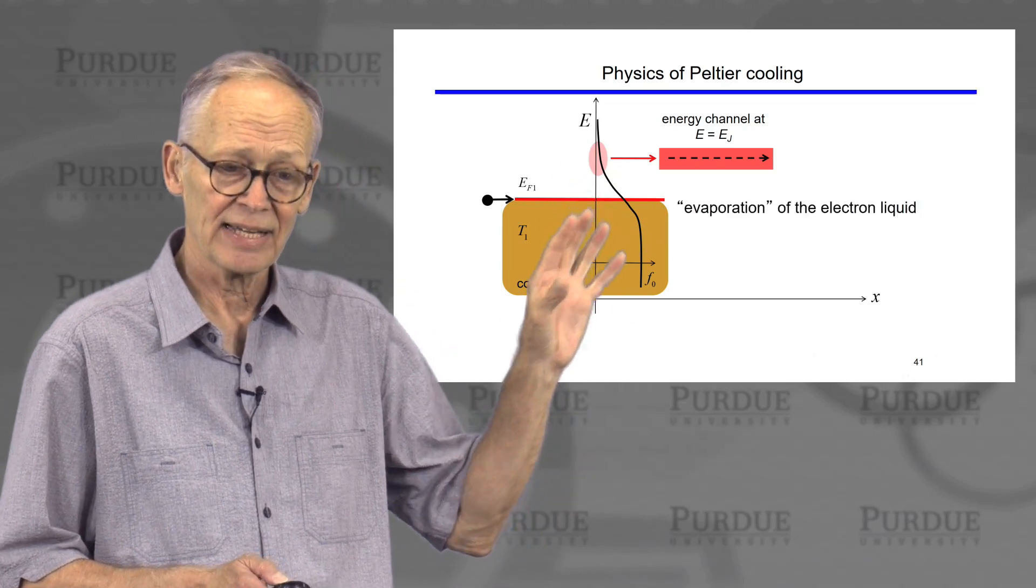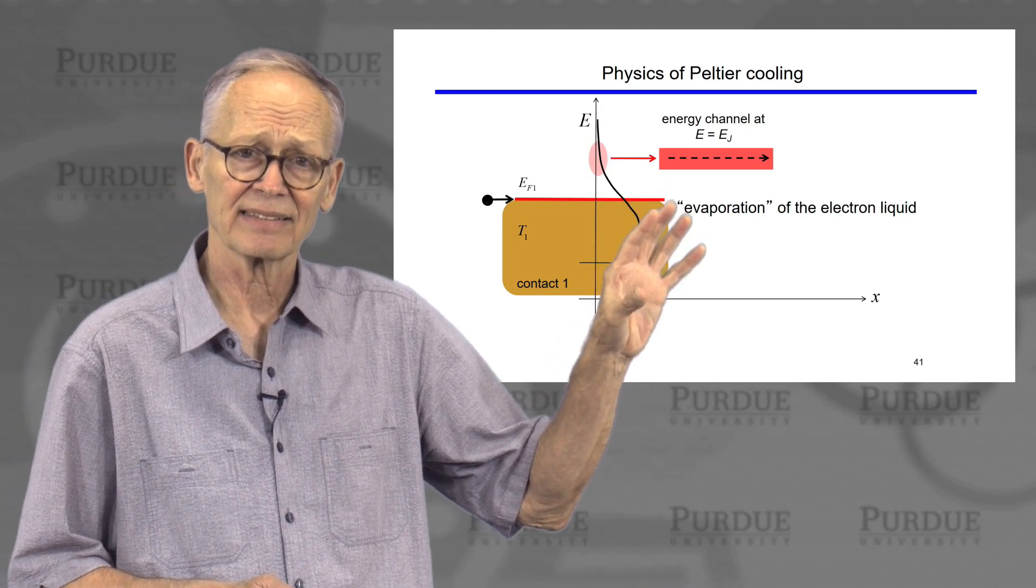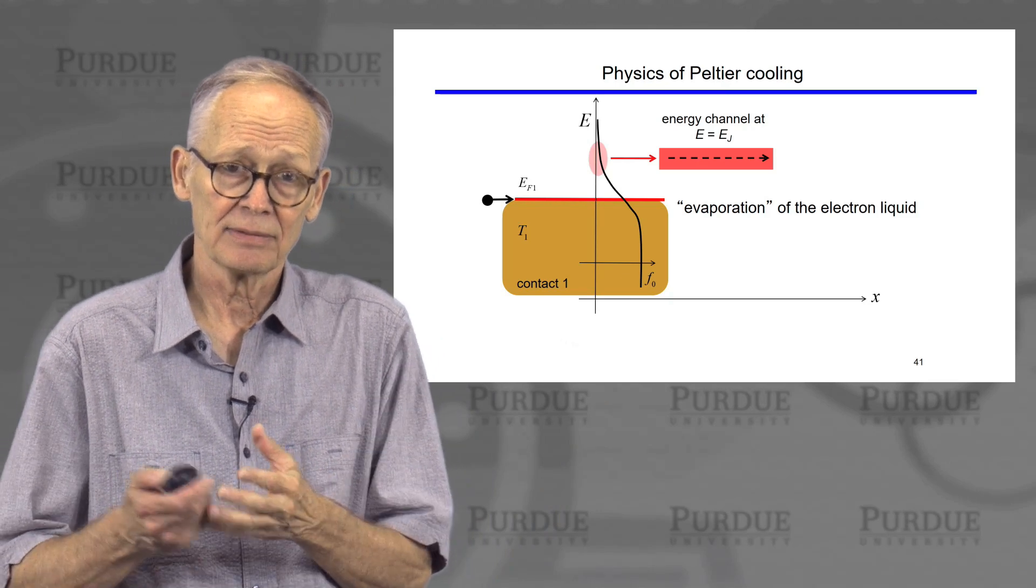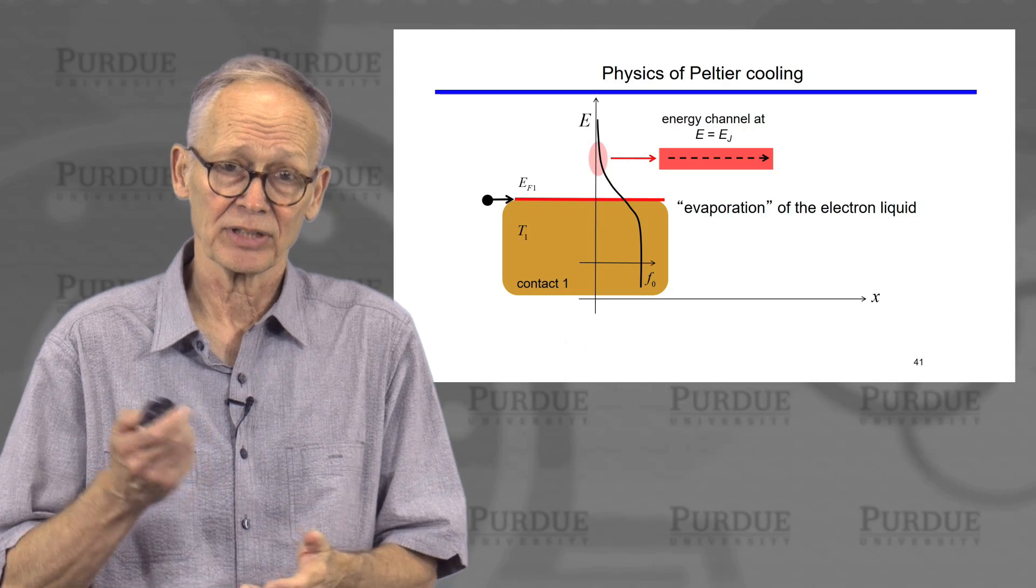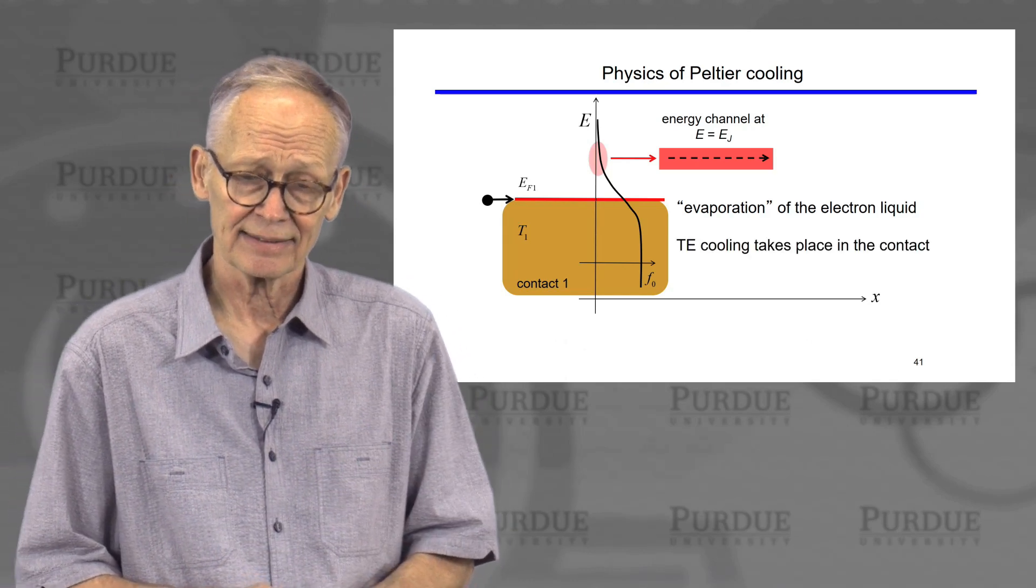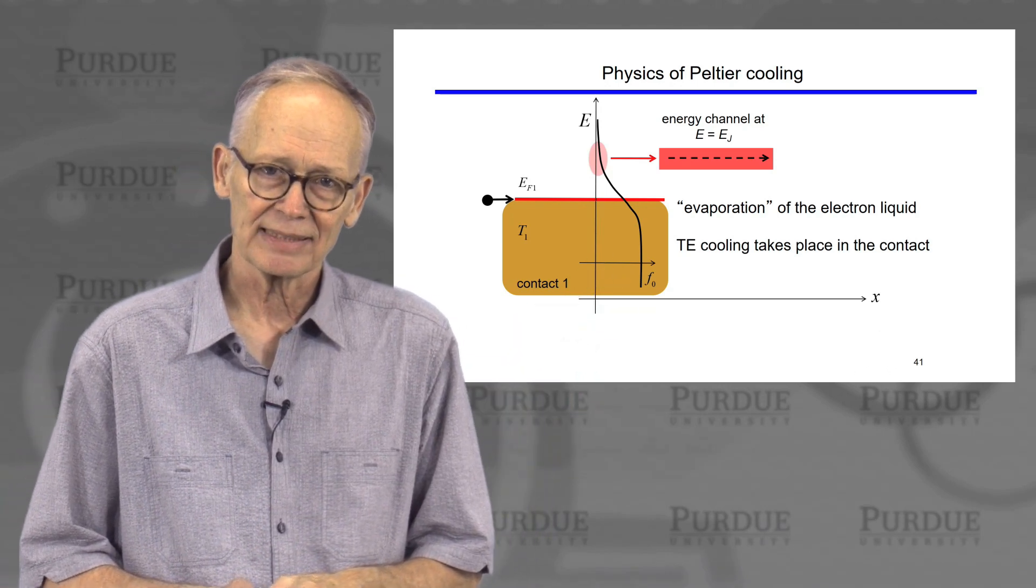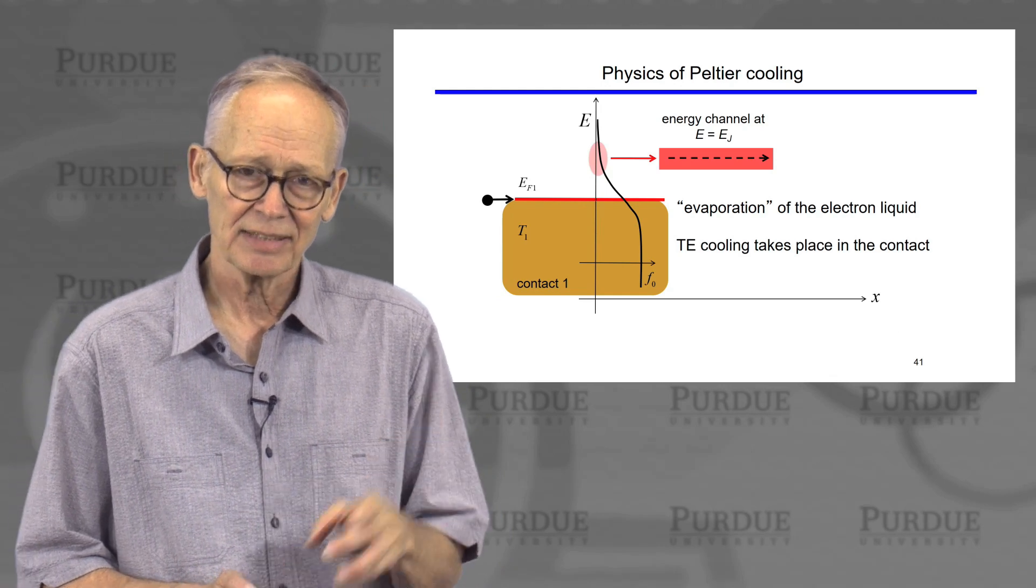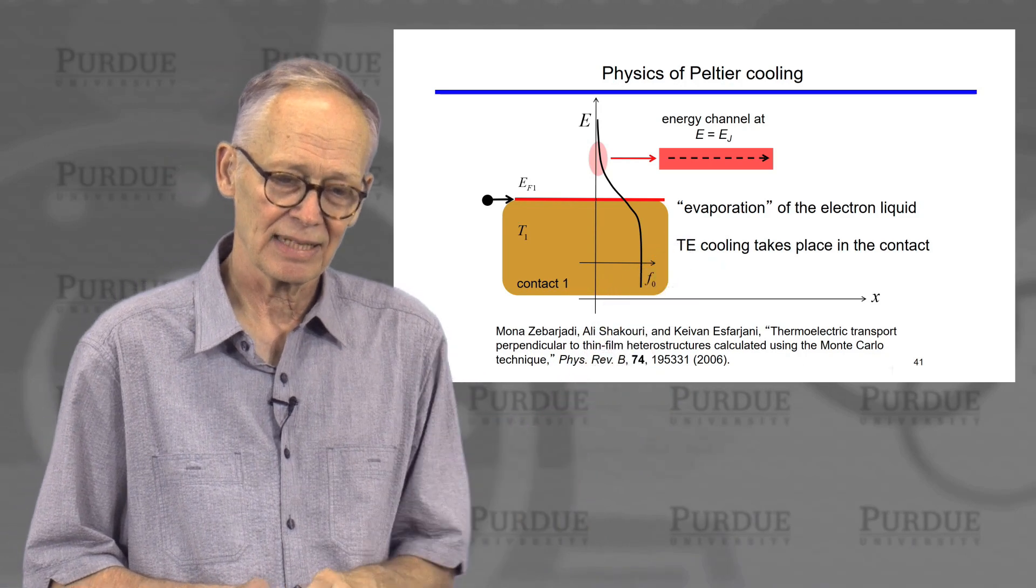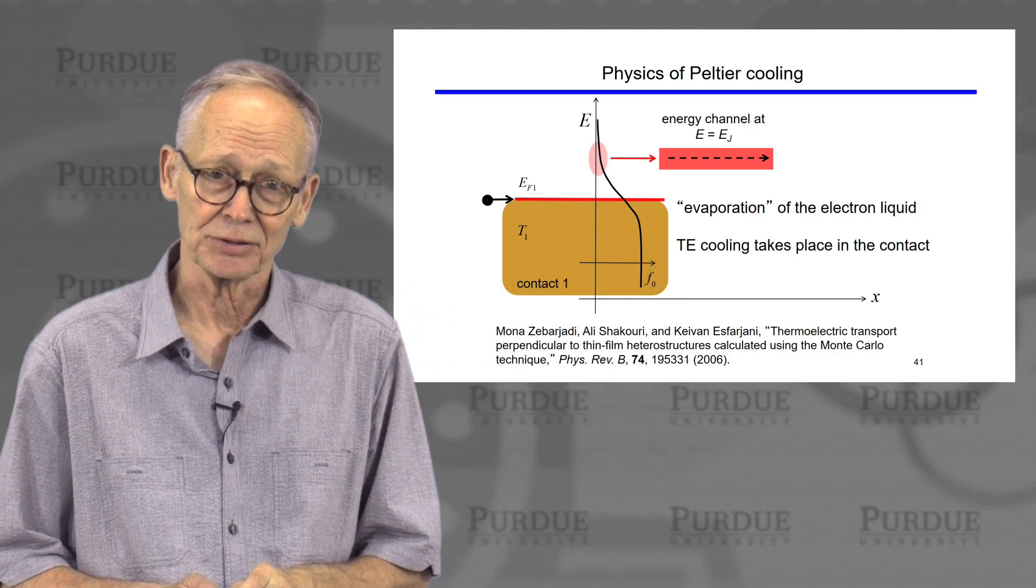So the cooling itself actually takes place in the contact. And you can think of this whole process as like the evaporation of a liquid from a container into a gas, overcoming an energy barrier. Electrons are evaporating from the contact into the semiconductor. But it's important to note that the thermoelectric cooling takes place not in the semiconductor, but in the metal contact itself. There's a very nice paper by my colleague Ali Shikiri and his students that discussed this in detail, and I can recommend that to you.